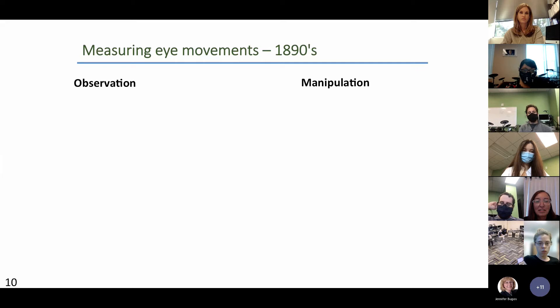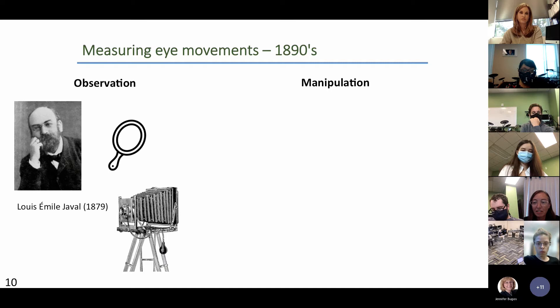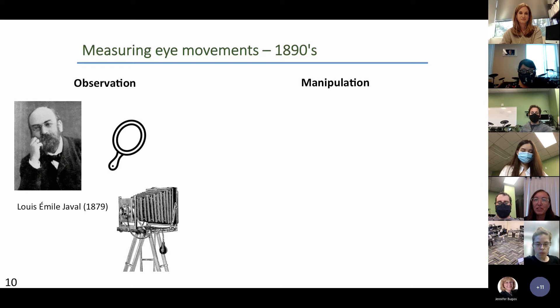Way back in the 1890s, there were two basic kinds of methods for measuring eye movements: observation and manipulation. Observation included a lot of just sitting and staring. Javal did a lot of work with mirrors, and they also tried taking still photos as people were reading. Over the decades this became more sophisticated with moving cameras and eventually video cameras.